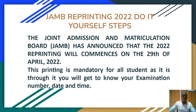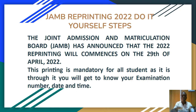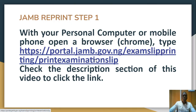Today we are going to look at what you need to do for your reprinting in order to continue with your exams. The Joint Admissions and Matriculation Board has announced that the 2022 reprinting will commence from the 29th of April 2022. This reprinting is compulsory for all students, because it is through this reprinting that you will confirm your examination number, your exam date, and your time. You must go to the examination hall with your reprinted examination slip — without it, no invigilator will allow you to enter.